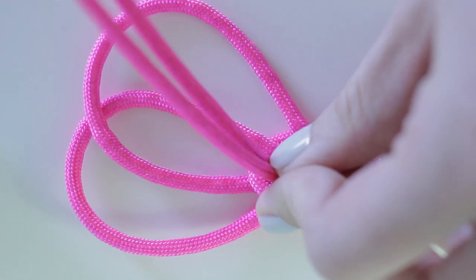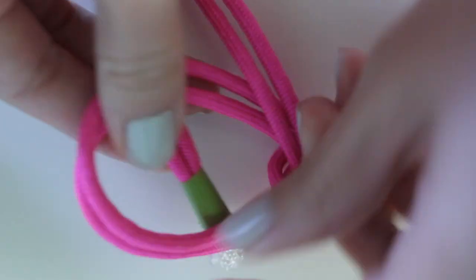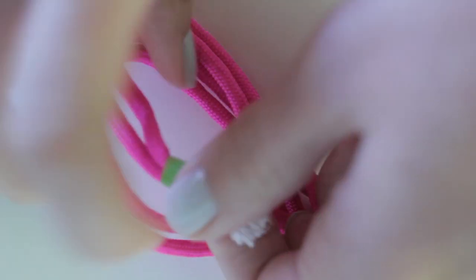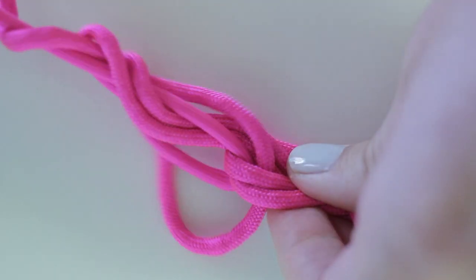Take the end of the string and place it through the loop. Again, you're creating a second knot. Then pull it tight.